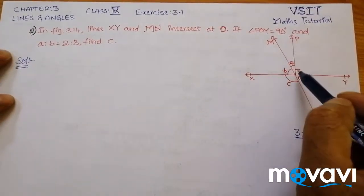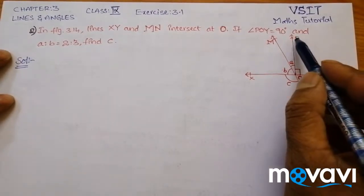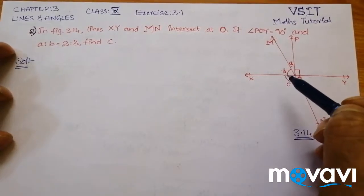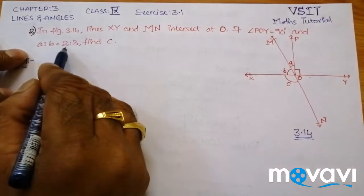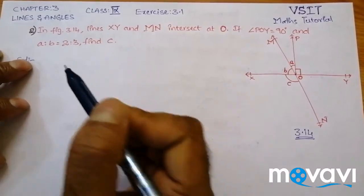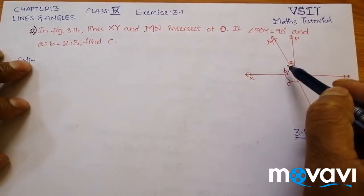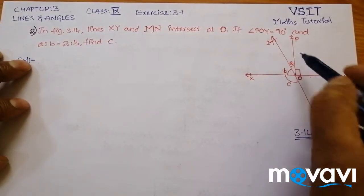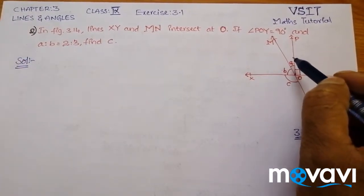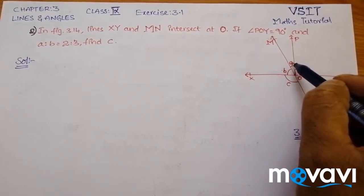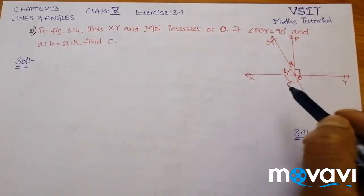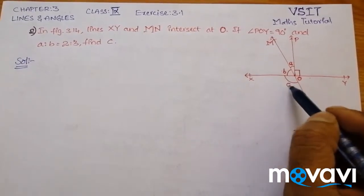If POY is 90 degrees, then surely POX will also be equal to 90 degrees. A is to B in the ratio 2:3, meaning if we consider an angle X, then A is twice X and B is thrice X. We have to find angle C.